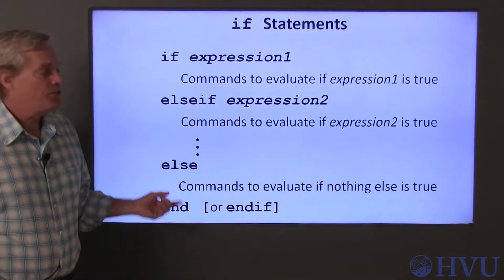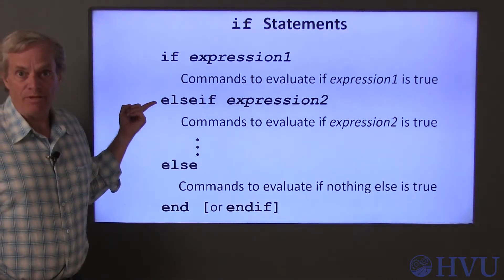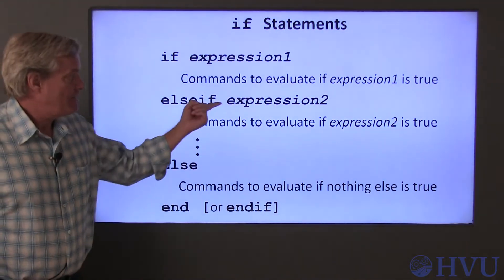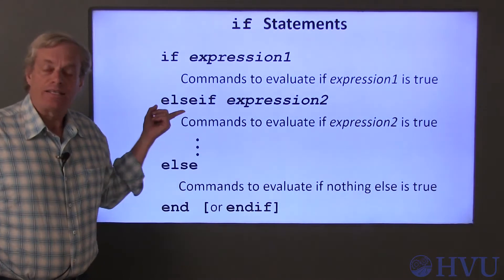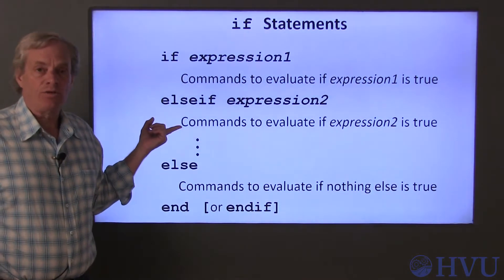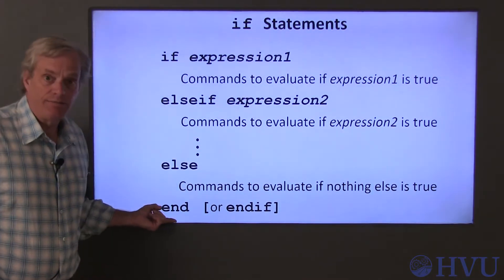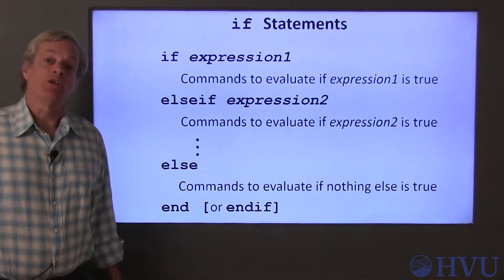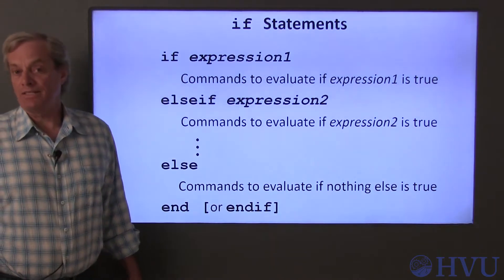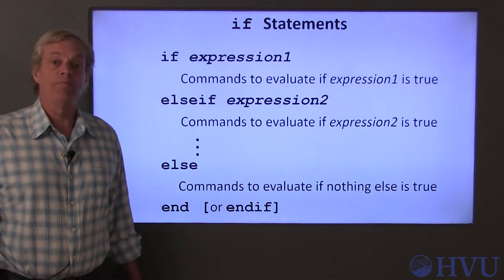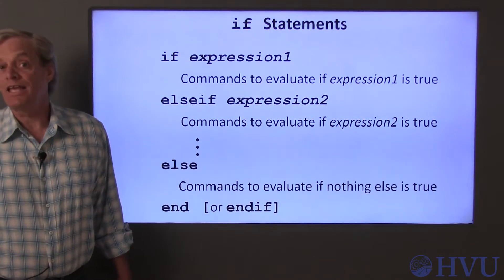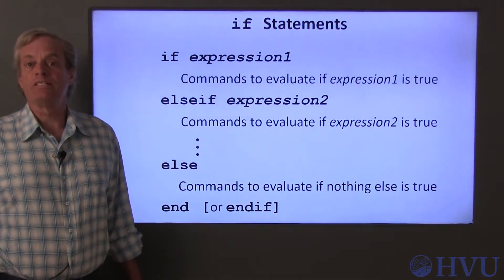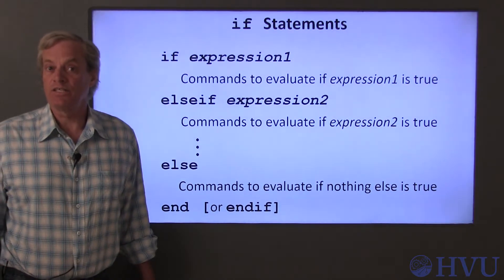To check for an alternate condition, you can use an ELSEIF statement, which includes a different expression that is either TRUE or FALSE. If this expression is TRUE, a set of commands below this statement are executed and the IF block terminates. You can have any number of ELSEIF statements — they all work the same way. If the logical expression associated with the ELSEIF statement is TRUE, the program does something and then stops checking any other conditions. If the logical expression is FALSE, the program continues to check the remaining conditions in the IF block.